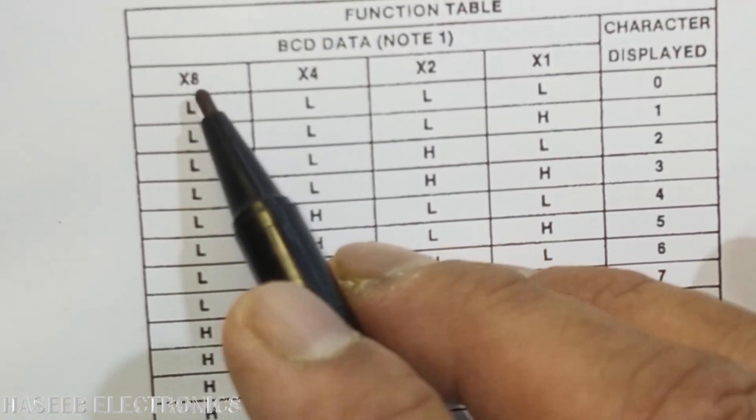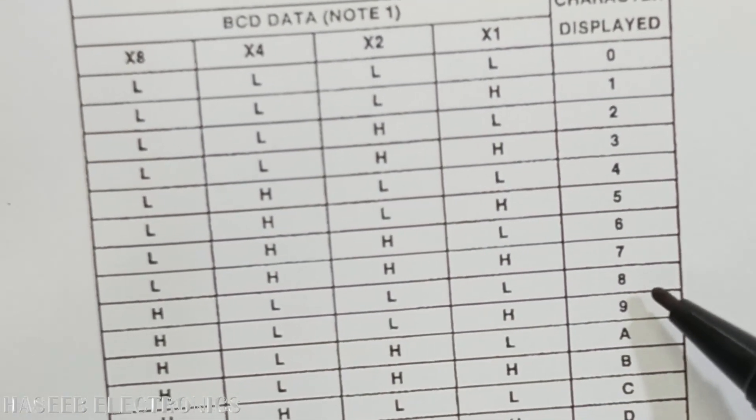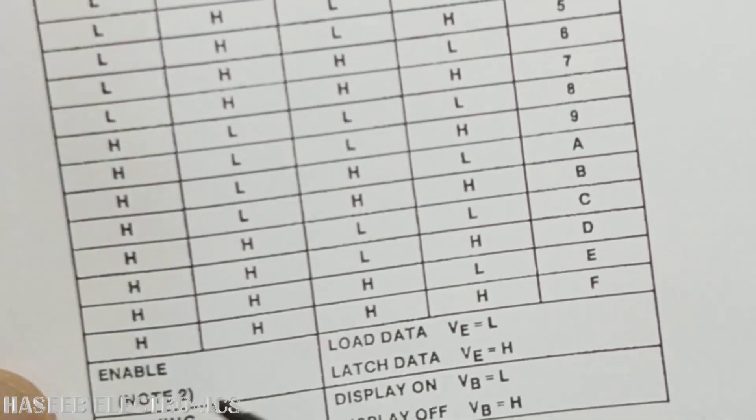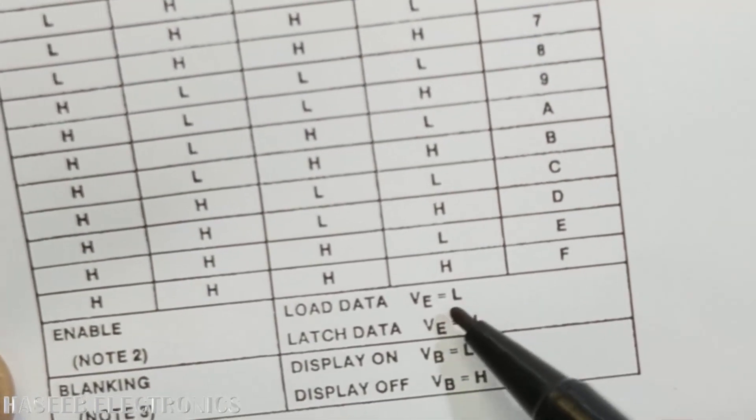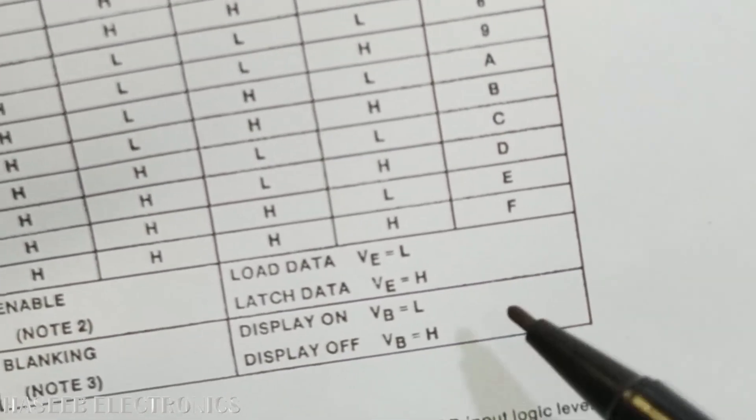Now we are writing 8. So X8, that is the MSB in this IC, high low low low, it will display 8. And the enable pin must be low, it will allow to load data. If it is high, it will latch data.